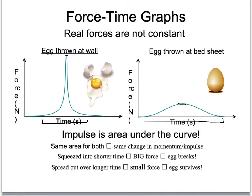Impulse is best thought of as your ability to stop something over a time, or speed something up over a time. Your impulse is the area under the curve, just like displacement is the area under the curve on a velocity graph. If you were to divide both graphs into shapes and find all the area under the curve — dividing into little tiny rectangles and triangles — for the egg hitting the wall and the egg hitting the bedsheet, what you'd find is that the areas are the same.